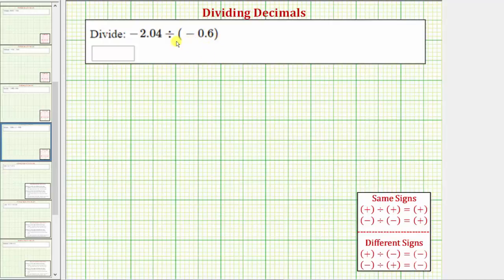Let's begin by determining the sign of this quotient. Because the signs are the same, or because we have a negative divided by a negative, notice the quotient will be positive. So because the quotient is positive, let's use the quotient of positive 2.04 and positive 0.6, instead of the given quotient of negative 2.04 divided by negative 0.6.